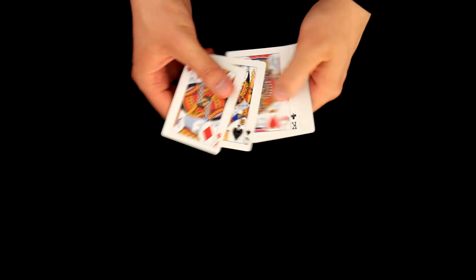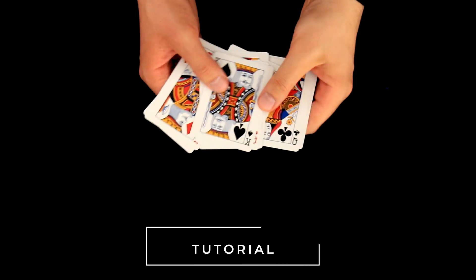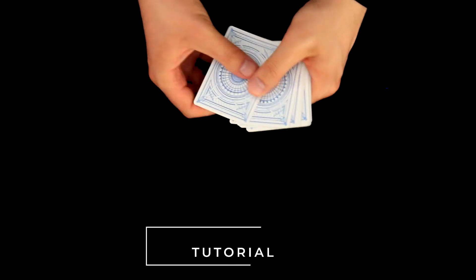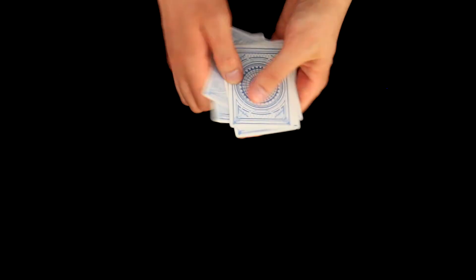Once the setup is done, we can shuffle the deck in any way that will not change the order. It means we can use for example a Charlier shuffle or we can just simply cut the deck like this.